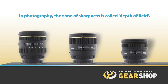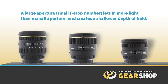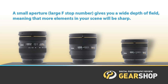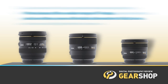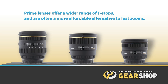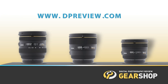When choosing a lens, here are a few things to remember about aperture. The zone of sharpness is called depth of field. A large aperture — small f-stop number — lets in more light and creates a shallower depth of field. A small aperture — large f-stop number — gives you a wide depth of field, meaning more elements in your scene will be sharp. Zoom lenses with a large, constant maximum aperture, while typically more expensive, give the photographer more control. Prime lenses offer a wider range of f-stops and are often a more affordable alternative to fast zooms. Keep up with the latest in photography news, compare products, and connect with other photographers at dpreview.com.